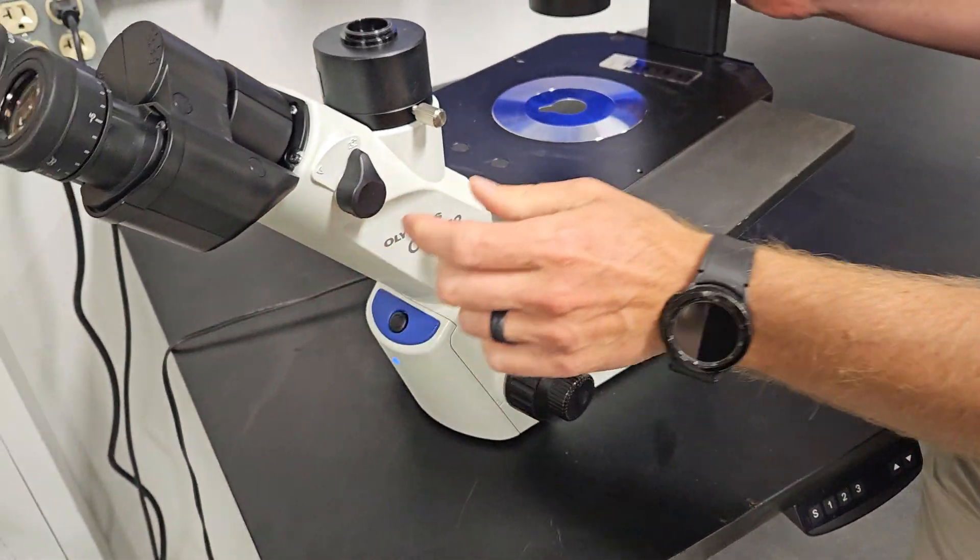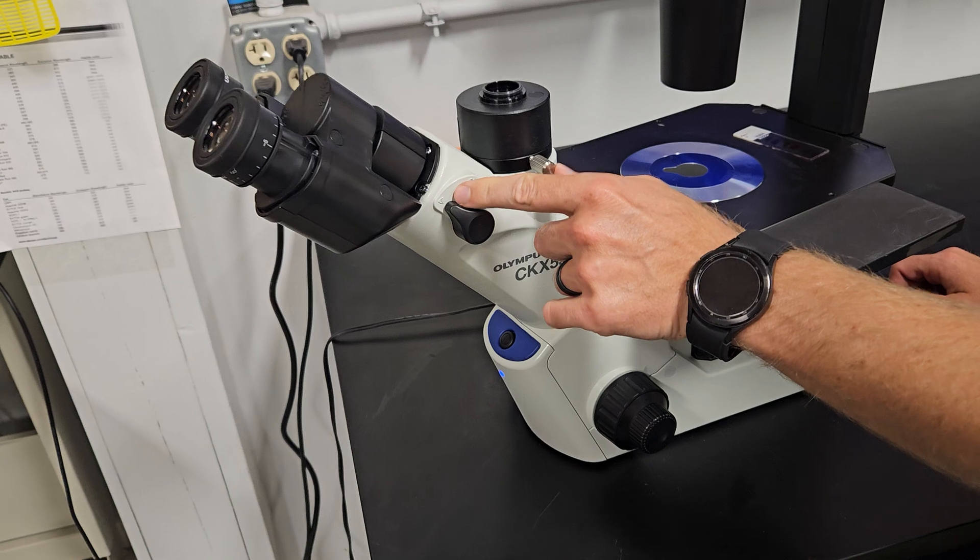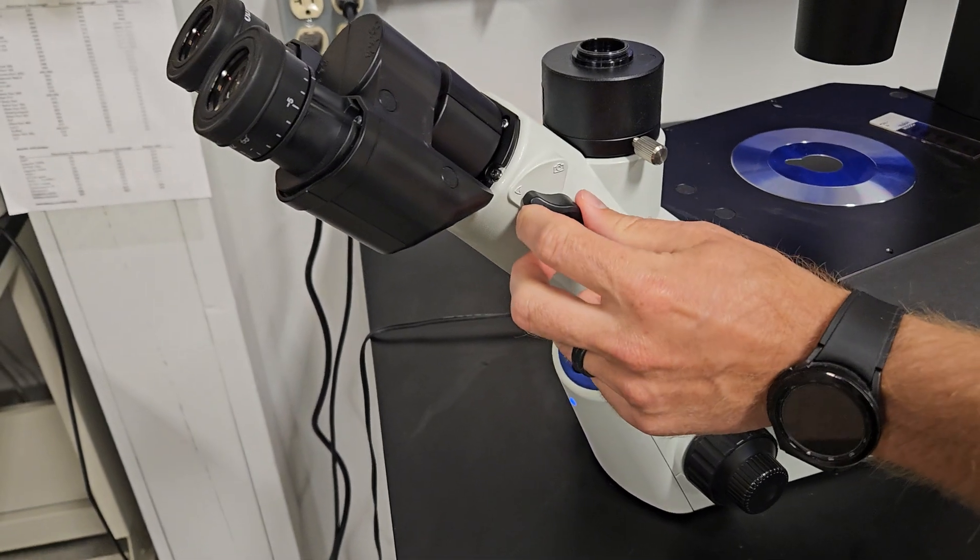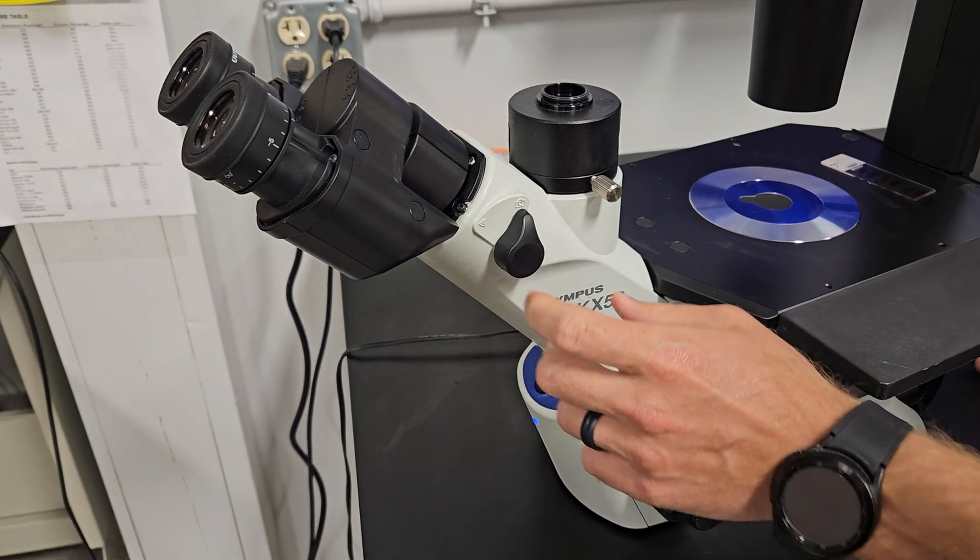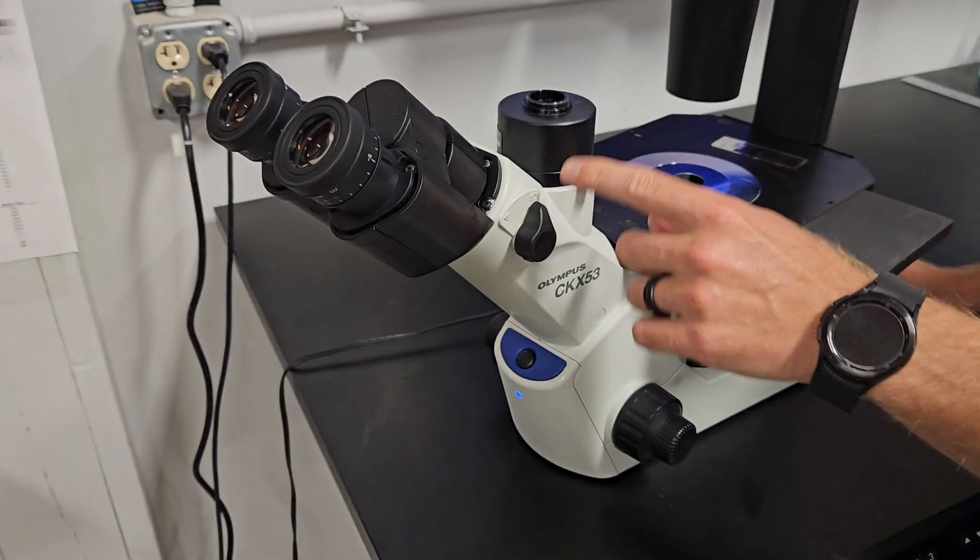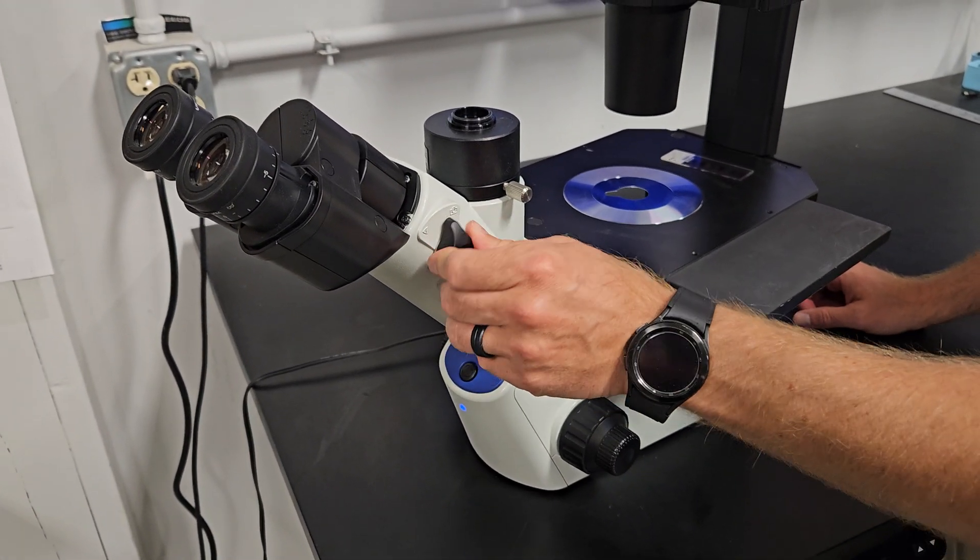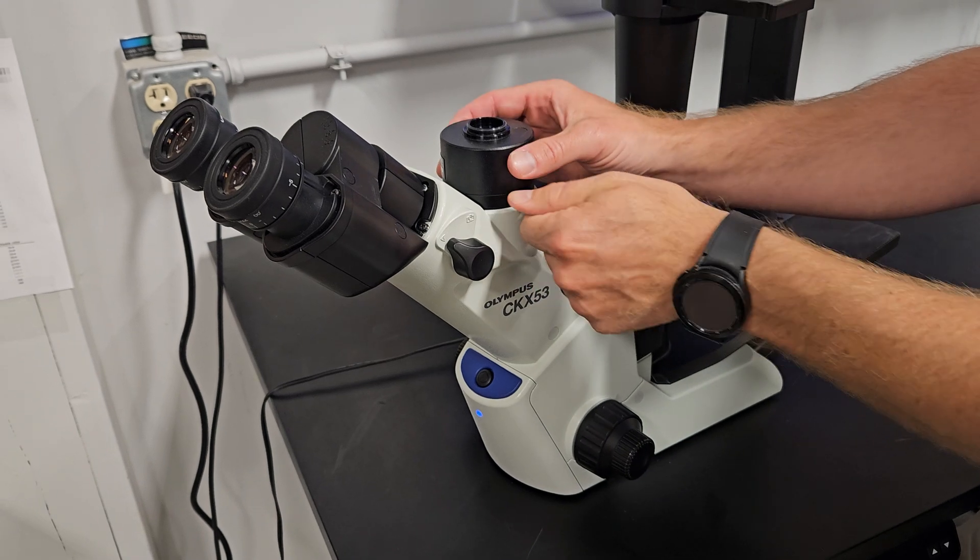You have 100% of the light to the eyepieces and then the light is split here. So this toggle switch. So if you go to your scope and you are having trouble seeing the camera, you might need to flip this switch.